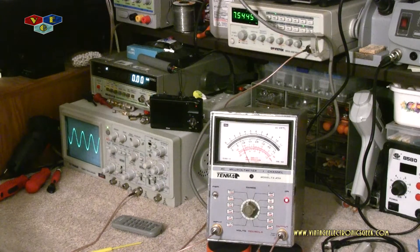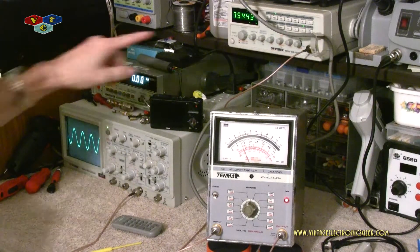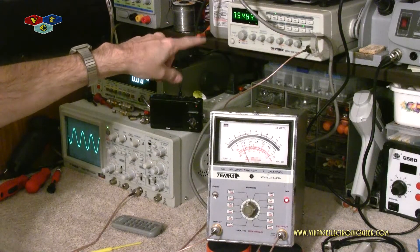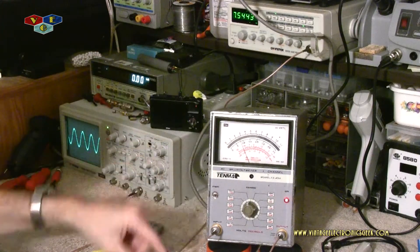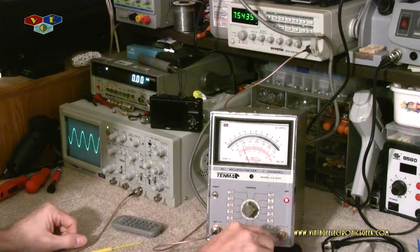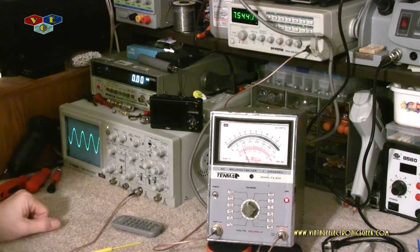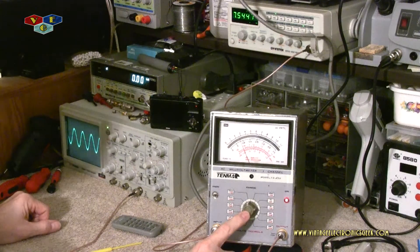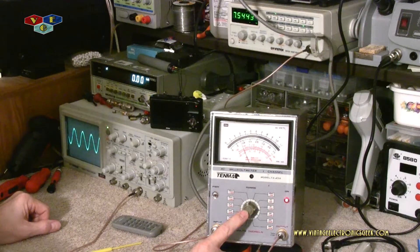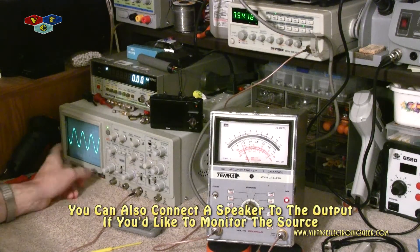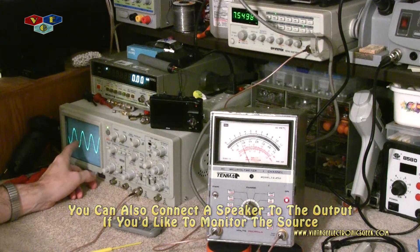I have the cover put back on and I've got it wired up to my function generator and that's at about 7.5 kilohertz running into the input. Then on the output we're going into the oscilloscope. I have this set to 3 volts, +10 dB setting, and as we could see we do have a signal, a sine wave here.